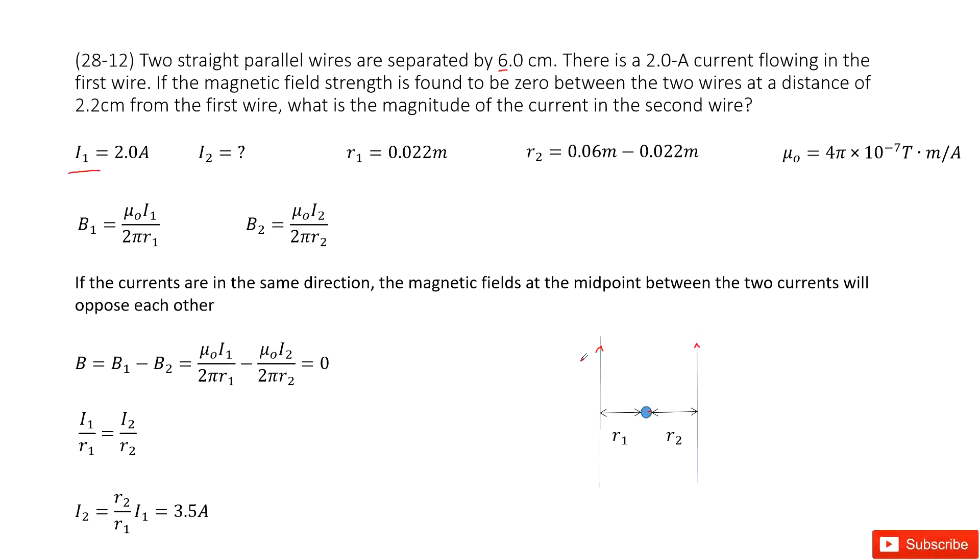For wire 1, we can see the magnetic field travels in a circle this way. Similarly, for wire 2, it travels this way. When it moves to this side,